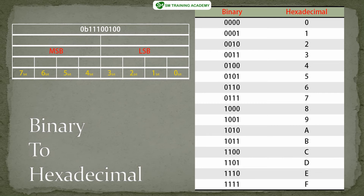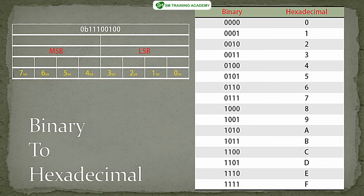Now for the binary to hexadecimal conversion, the binary number we'll use as an example is 0b11100100. The first step is the same: split this 8-bit number into two 4-bit nibbles. The MSB of the byte is 1110 and the LSB of the byte is 0100.